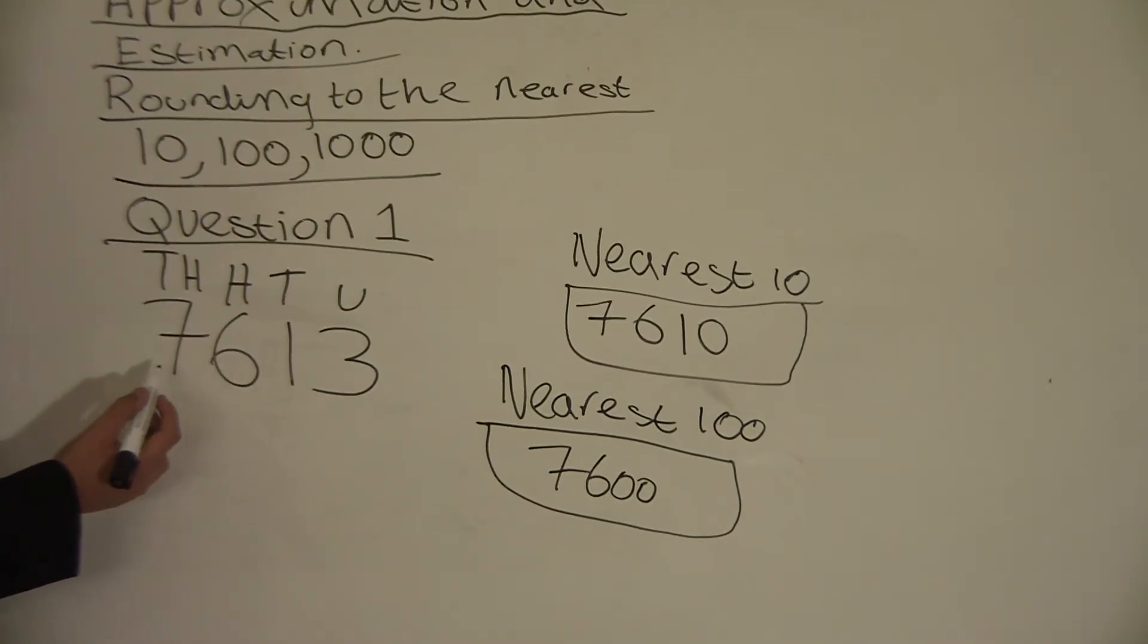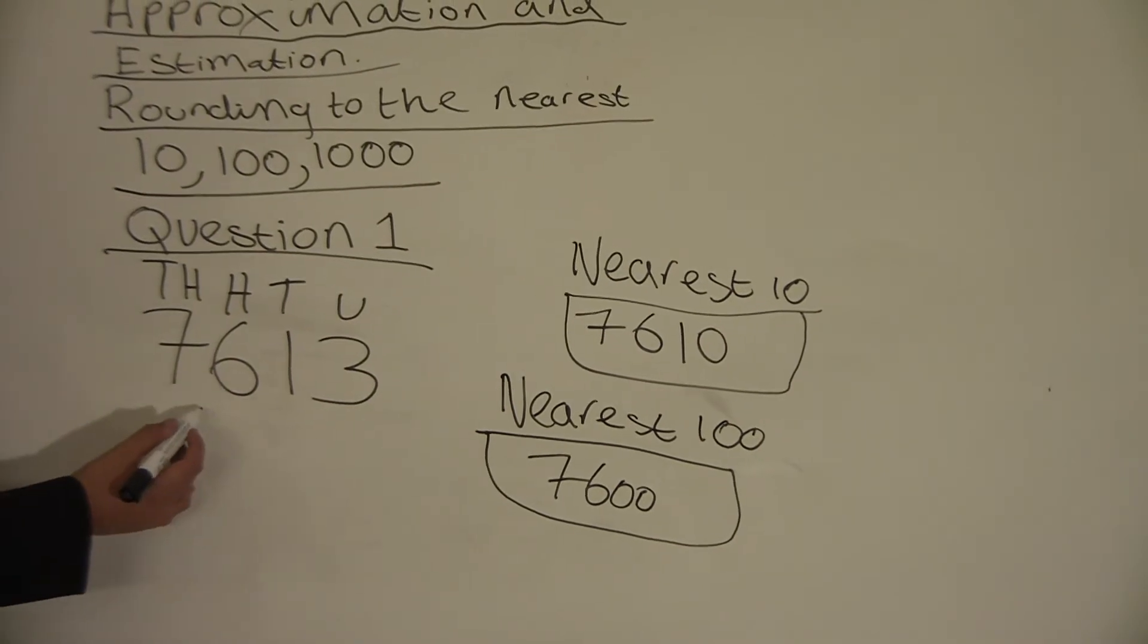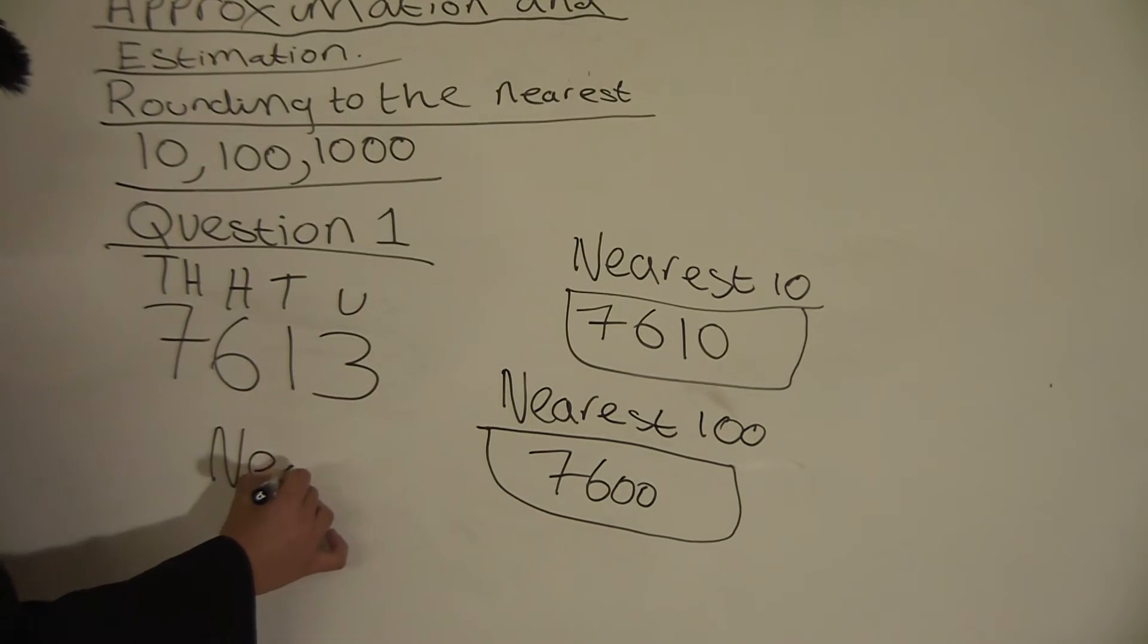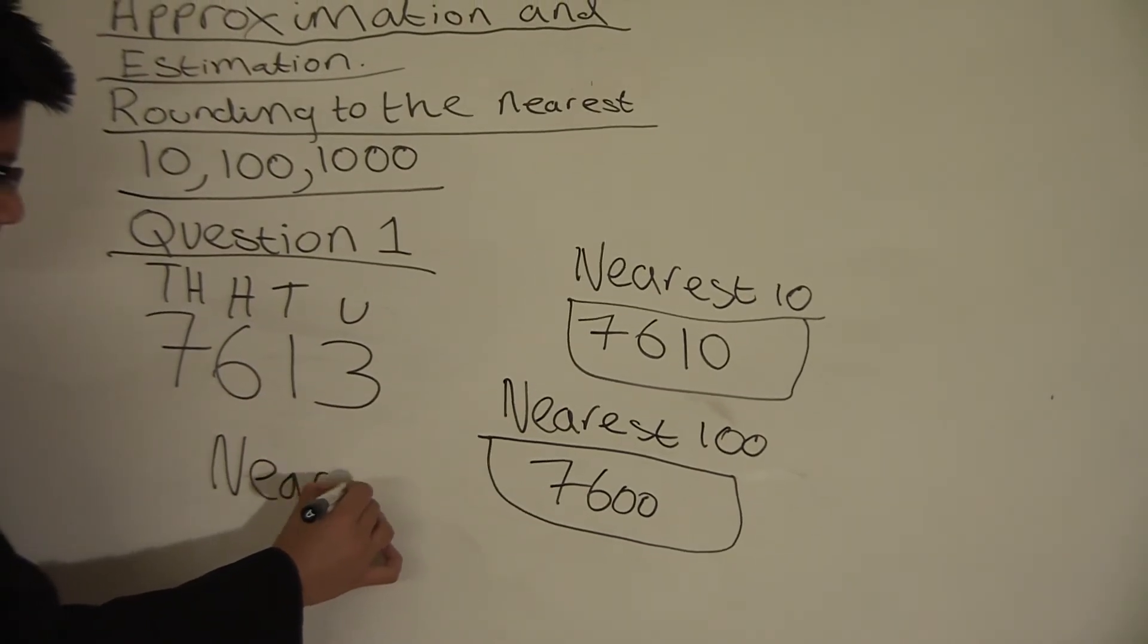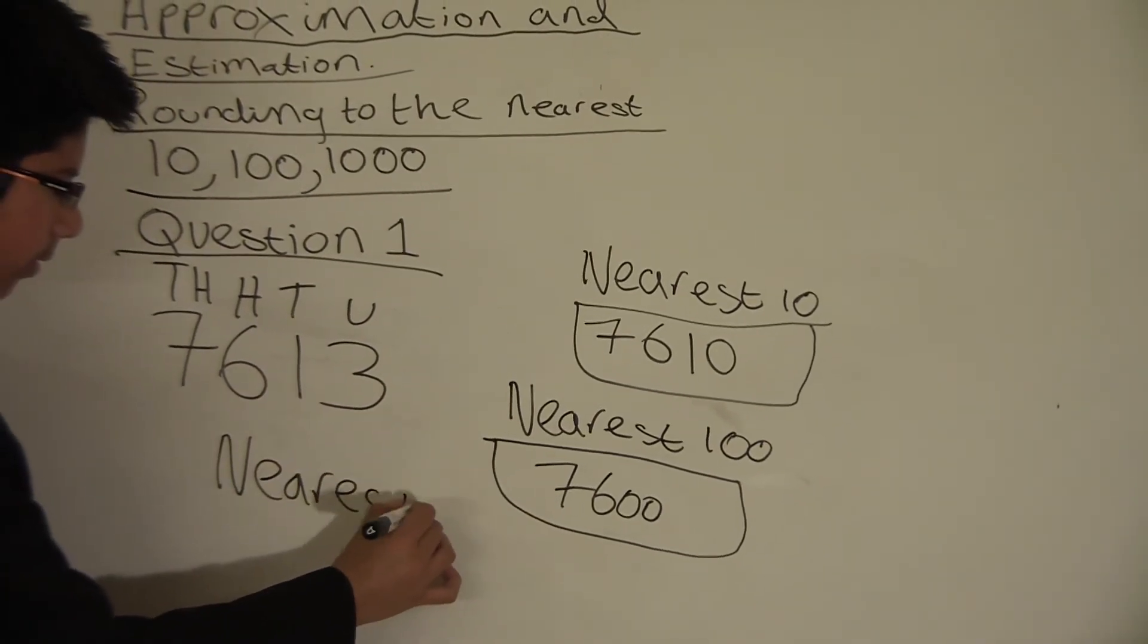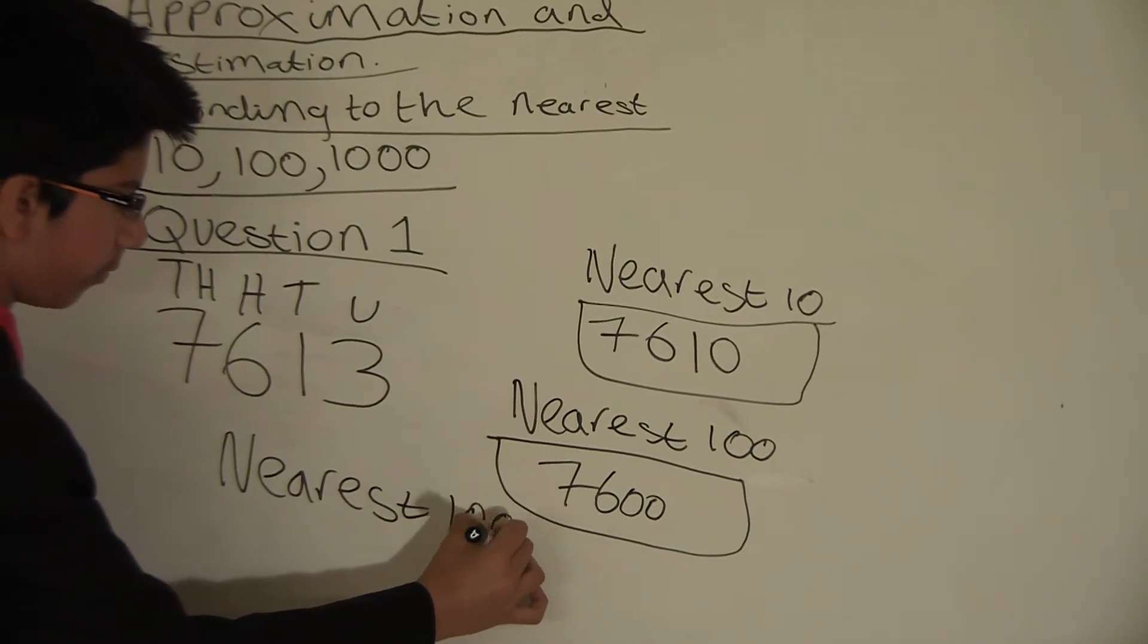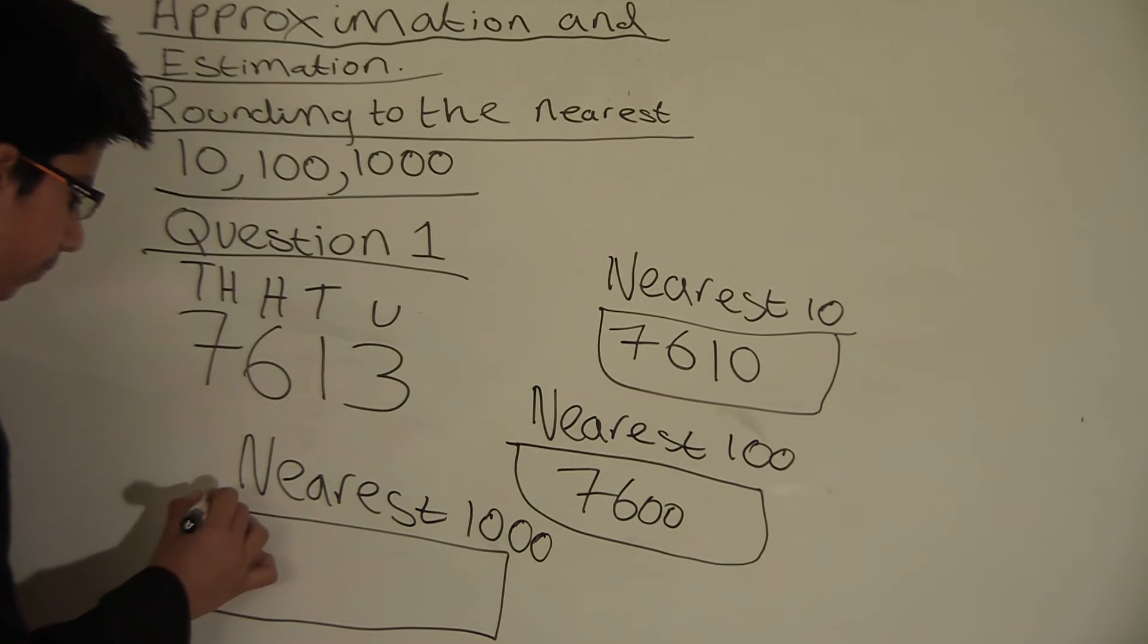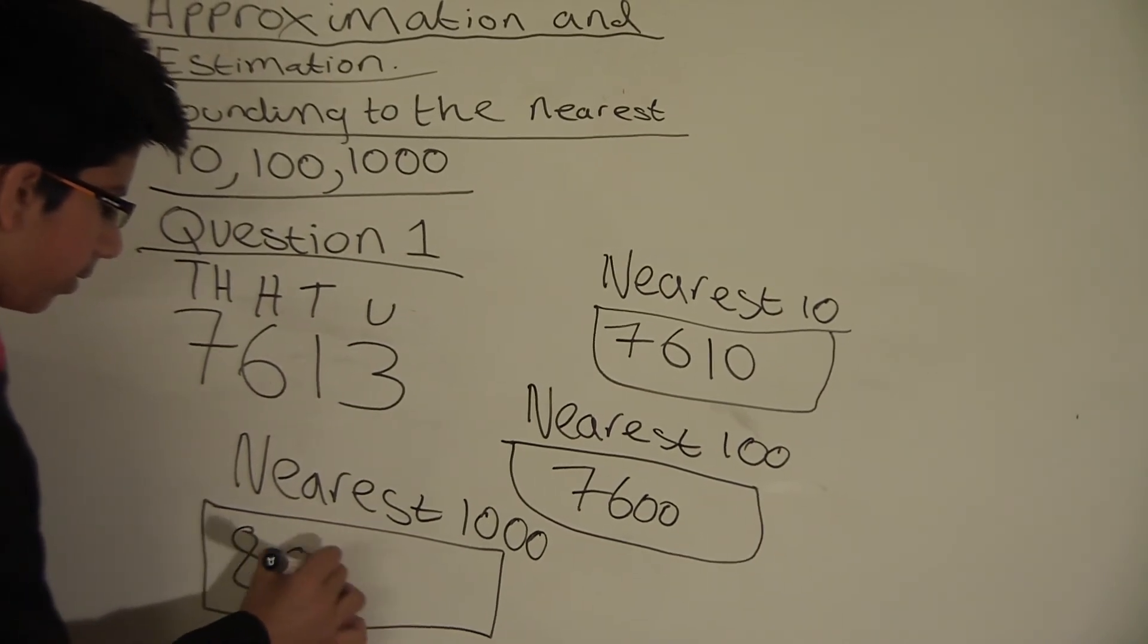We will get eight thousand when we round it up to the nearest one thousand. Nearest one thousand is eight thousand.